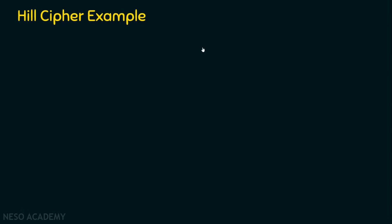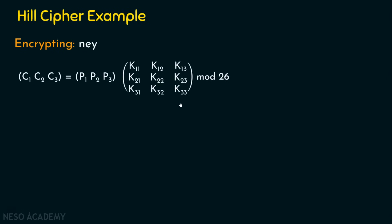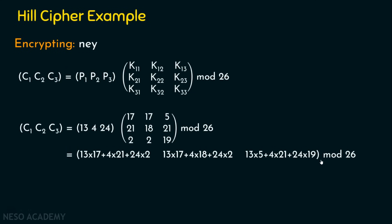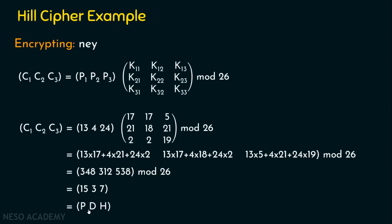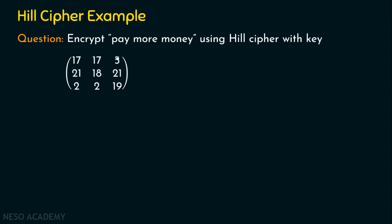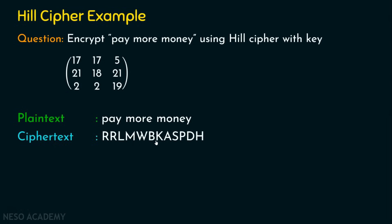Finally, encrypting NEY (N=13, E=4, Y=24): multiplying by the key matrix mod 26 gives 348, 312, 538. The remainders when divided by 26 are 15, 3, and 7, corresponding to P, D, H. So plaintext NEY is encrypted as PDH. The full plaintext 'pay more money' is encrypted as the ciphertext RRLMWBKASPDH.